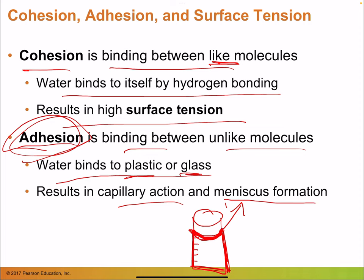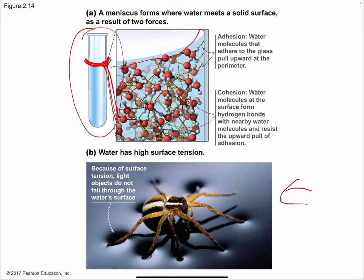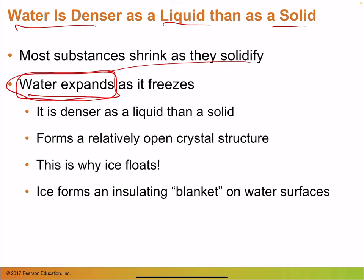The meniscus is caused by adhesion of water clinging to the side of the glass. Surface tension from hydrogen bonding between water molecules is strong enough for spiders to walk on the surface of water. Water is also denser as a liquid than as a solid — most substances shrink as they solidify, but water expands when it freezes, which is why it comes up over an ice tray.